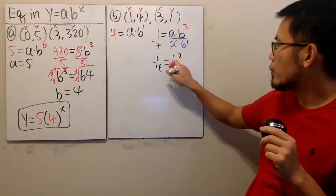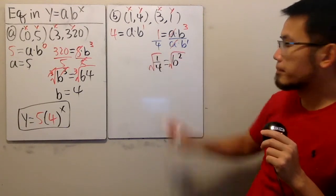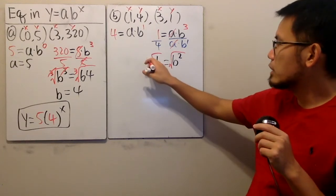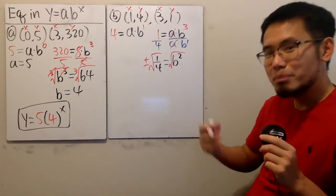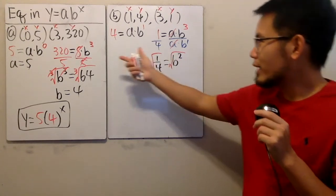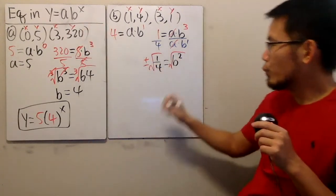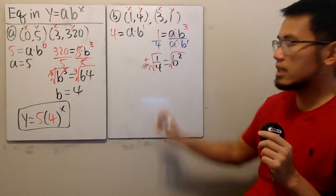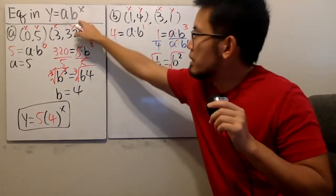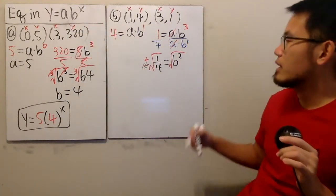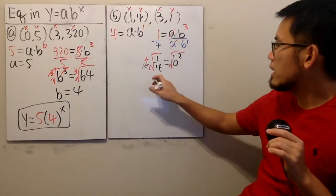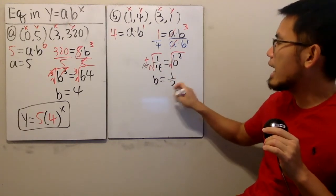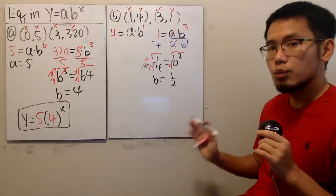We take the square root on both sides. Technically we should put down plus or minus, but remember, when we are doing exponential functions, we don't want a negative base. So b cannot be negative, and we just say b equals the square root of 1 over 4, which is just positive 1 half.